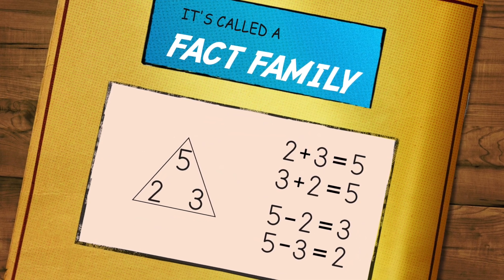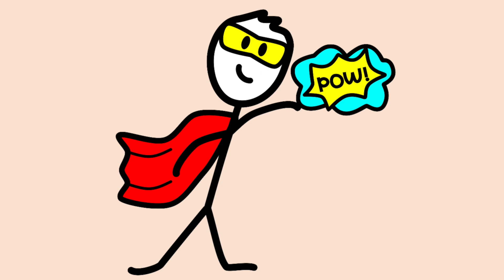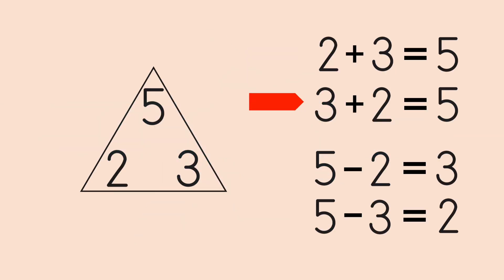One example of a fact family includes the numbers five, three, and two. Super Math Person got four number sentences out of these three numbers. Three plus two equals five. Two plus three equals five. Five minus three equals two. And five minus two equals three.